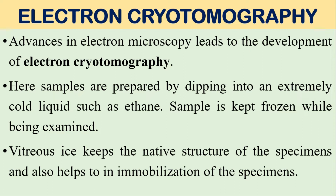Advances in electron microscopy led to the development of electron cryo-tomography. Here, samples are prepared by dipping into an extremely cold liquid — normally ethane is used. The sample is kept frozen while being examined. In electron cryo-tomography, vitreous ice keeps the native structure of the specimen.